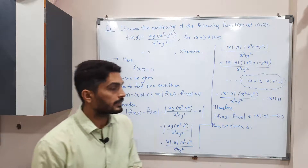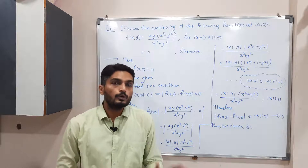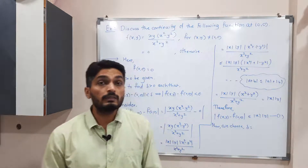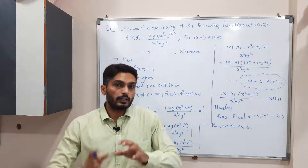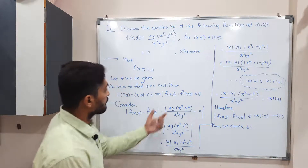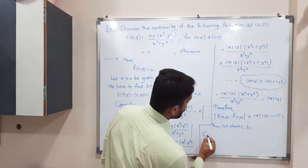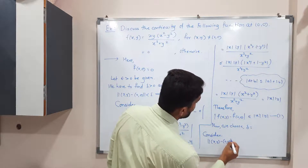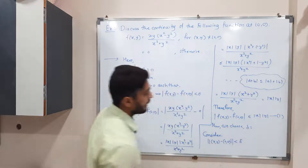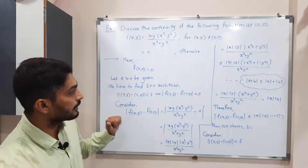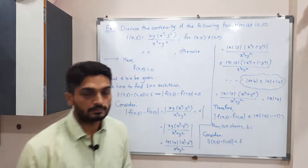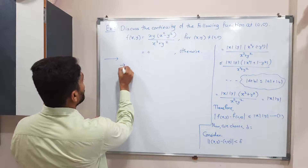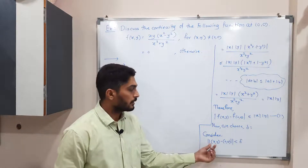We now choose delta — but we don't yet know which delta to select. So we skip that step for now and proceed further. After solving a few more steps, we will see which delta to choose and write it in accordingly. Now consider ‖(x,y) − (0,0)‖ < δ.